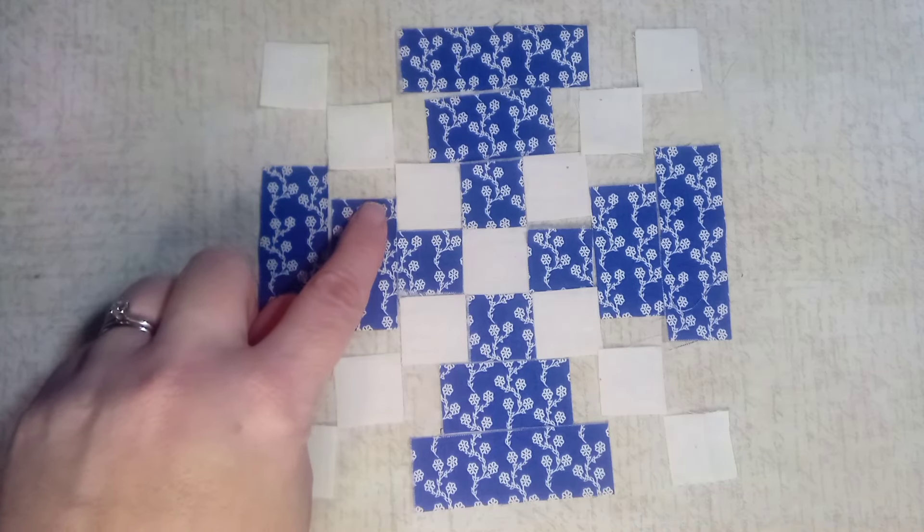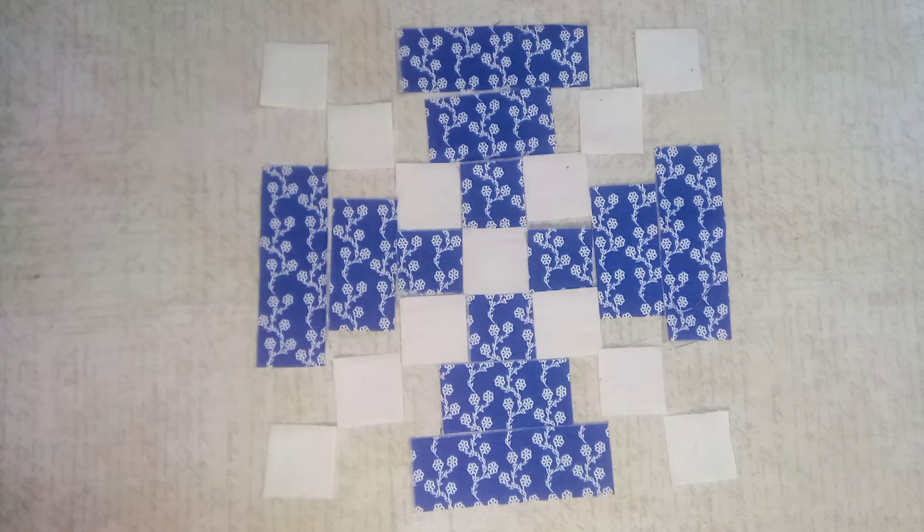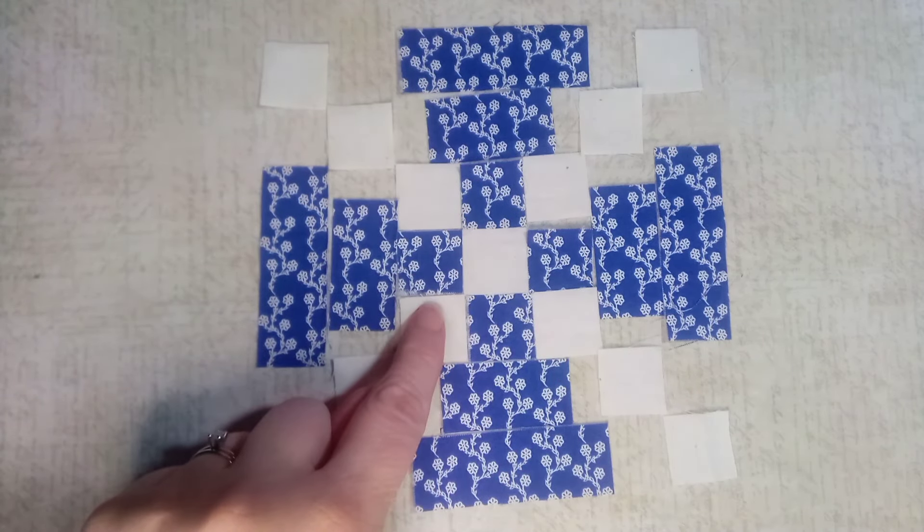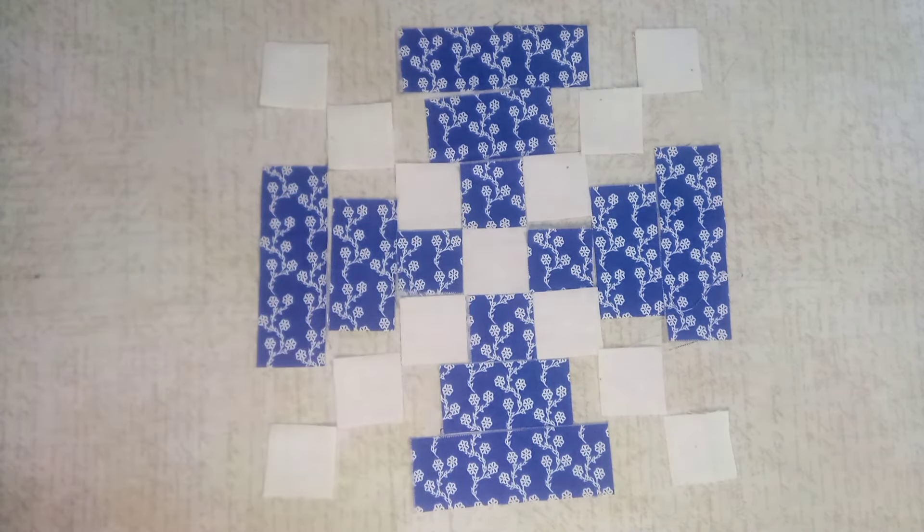As pieces are sewn together, the center will of course shrink up so that they'll then line up with these. So now what I'm going to do is draw my quarter-inch stitching line on the back side of my pieces and start stitching everything together. I'm going to start with this nine patch in the center, get this sewn together, and then start working on the next parts.